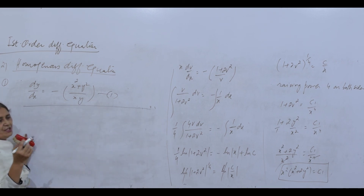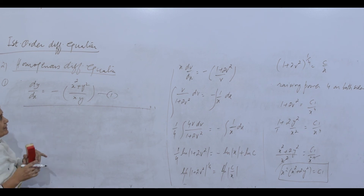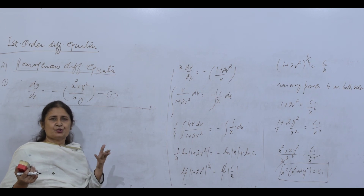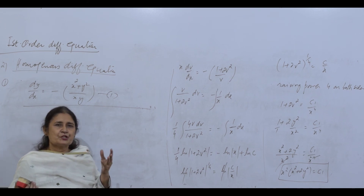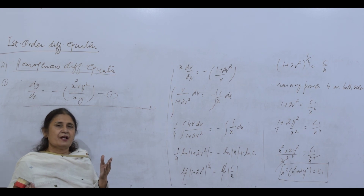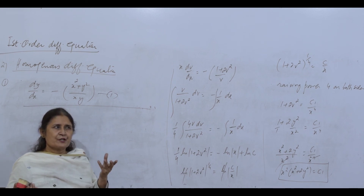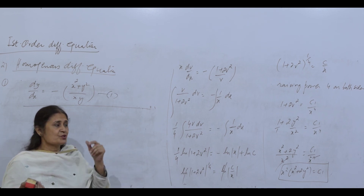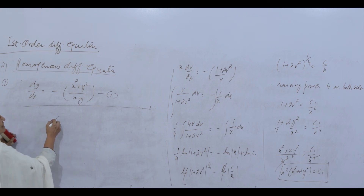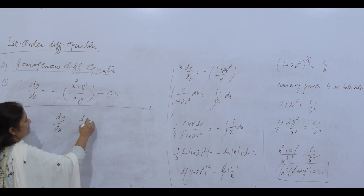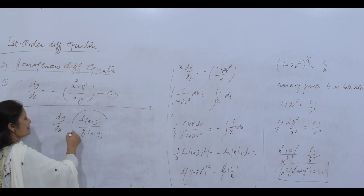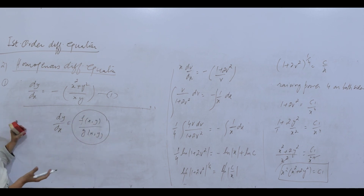One more idea: sometimes the function is a polynomial and you can easily check homogeneity. But if it involves exponential or trigonometric terms, how do you decide? For those cases, define k(x,y) = f(x,y)/g(x,y) and name the whole function k(x,y).